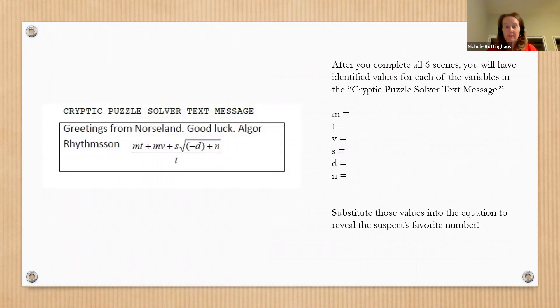So you're going to solve puzzles one, two, three, four, five, and six. At the very end, at the very bottom of the last page, you're going to see this cryptic puzzle solver text message. This is where you're going to plug in your values that you solved for. V will get plugged into that equation, along with all of the other letters that you're going to find in the puzzles. And when you plug into that equation and solve it, then you get the suspect's magic number, favorite number, and that identifies who the suspect is.